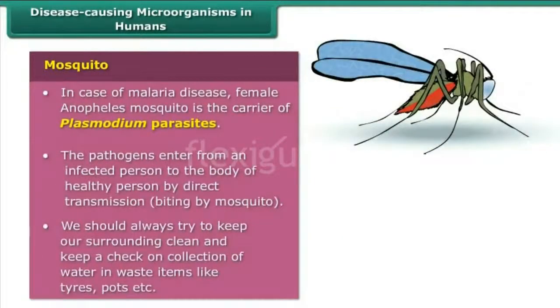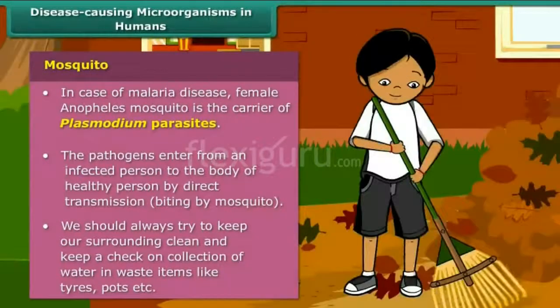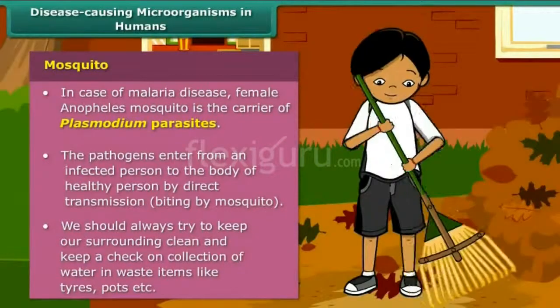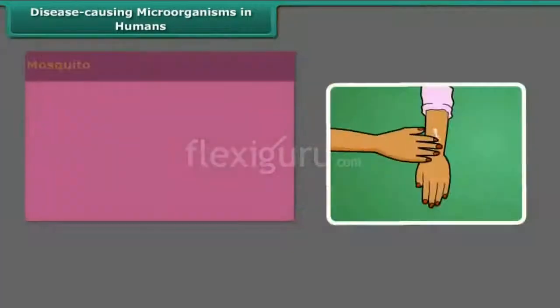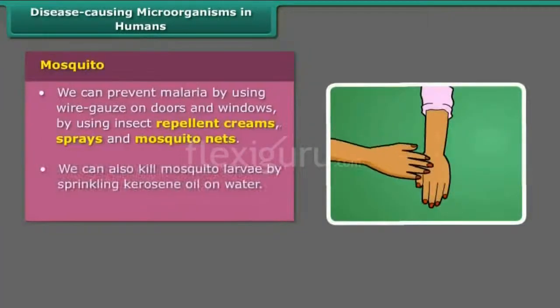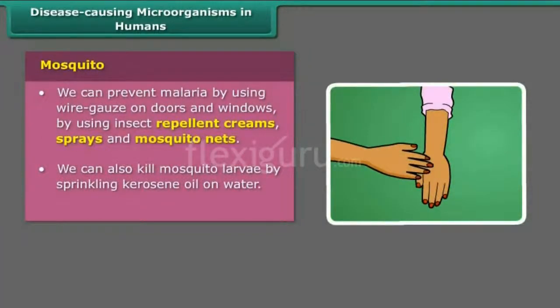In malaria disease, the female Anopheles mosquito is the carrier of plasmodium parasites. We should use repellent creams, sprays, and mosquito nets to prevent malaria.